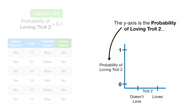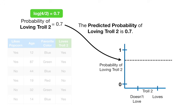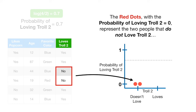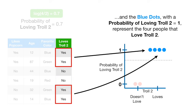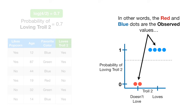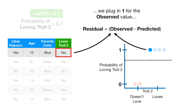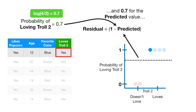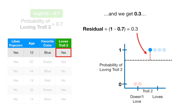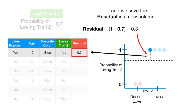Although the math is easy, I think it's easier to grasp what's going on if we draw the residuals on a graph. The y-axis is the probability of loving Troll 2. The predicted probability of loving Troll 2 is 0.7. The red dots, with the probability of loving Troll 2 equal to 0, represent the two people that do not love Troll 2. The red and blue dots are the observed values, and the dotted line is the predicted value. So for this sample, we plug in 1 for the observed value and 0.7 for the predicted value, and we get 0.3. And we save the residual in a new column.